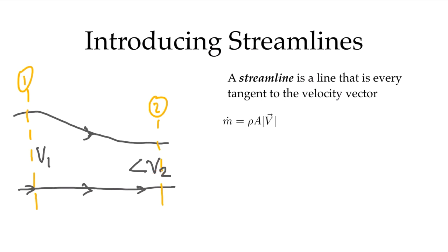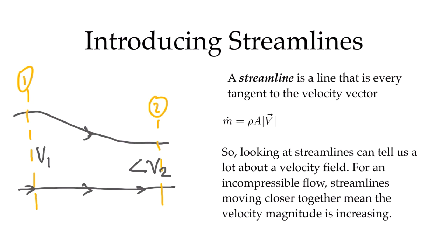Anytime I see streamlines, especially for an incompressible flow where the density is everywhere the same, I can say that as those streamlines move closer together the flow is in fact speeding up. If the streamlines are moving further apart in the direction of flow, then the flow is slowing down. That gives us a very useful tool to understand fairly complex velocity profiles.